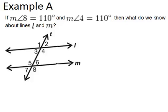In example A, it says if the measure of angle 8 equals 110 degrees, so I see angle 8 here, that's 110 degrees, and the measure of angle 4 equals 110 degrees.